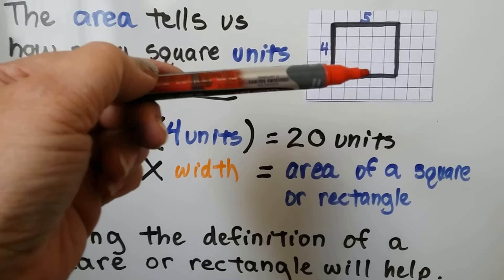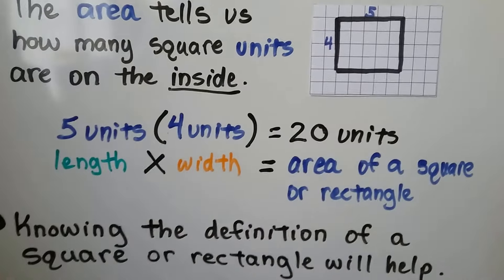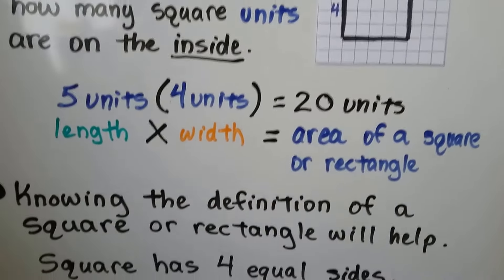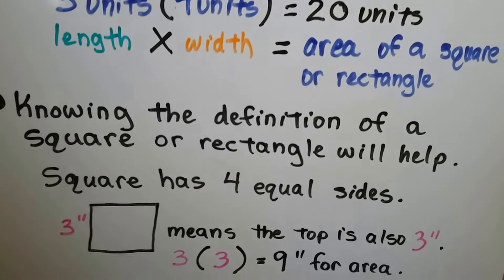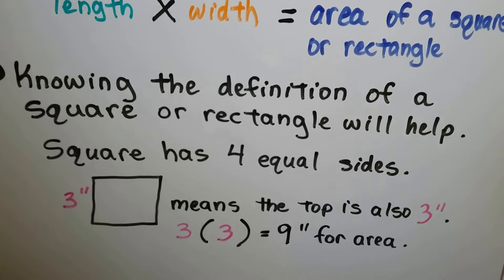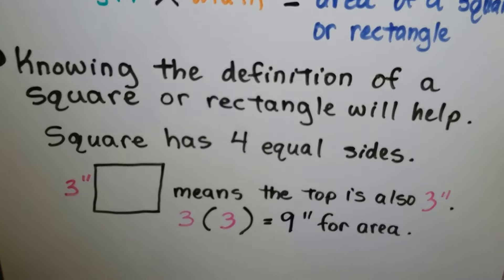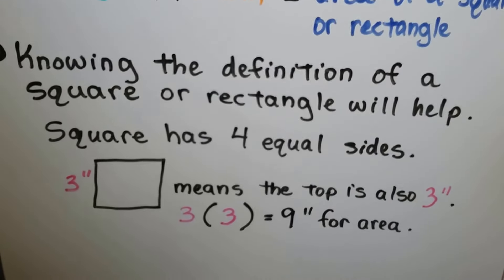5, 10, 15, 20 — 20 units. And knowing the definition of a square or rectangle can help. A square has 4 equal sides.